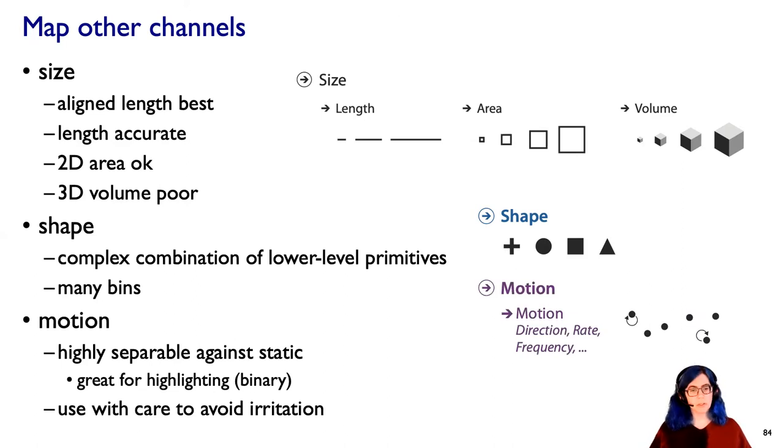And then finally, with motion, a key thing to know is that this is a highly separable channel, very separable against any of the static channels. That means it's great for highlighting, especially if you're highlighting just a binary thing, if you're trying to visually indicate that a highlight is there or is not as a binary state.